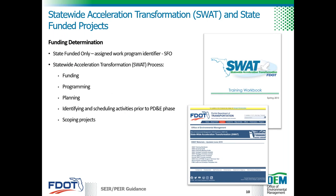If it's determined that the project will be state funded only, it's assigned a work program identifier of State Funds Only or SFO. Once determined to be an SFO project, it's not easy to change to a federal project. The funding determinations and programming decisions are made early through the Statewide Acceleration Transformation process or SWAP process, which is a project management approach that streamlines FDOT's project delivery through early coordination among the different functional offices within the district.